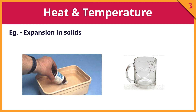Sometimes the cap of a bottle becomes tight and doesn't open. Then we dip the cap in hot water, and after some time, by turning it upside down, it opens — because it becomes loose due to thermal expansion. Another example: when boiling water is poured into a thick glass tumbler, the tumbler breaks, because the expansion of the inner surface is more than that of the outer surface.